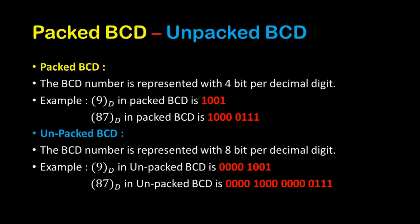Coming to another example, the decimal digit 87 in Unpacked BCD form is represented as 0,8 and 0,7. That is, in Unpacked BCD form: 0000 1000 — that is 0, 8.